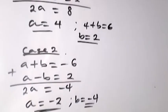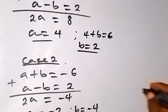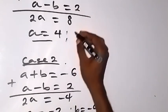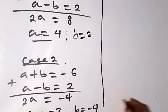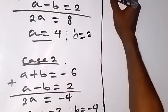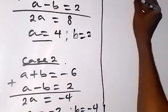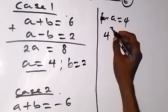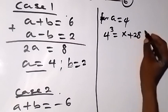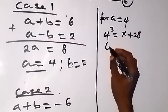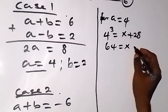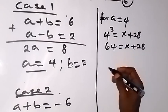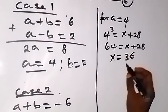For the first value of a, we have a equals 4. So if a is 4, we have a cubed: 4 raised to power 3 equals x plus 28. So 4 raised to power 3 is the same as 64, then 64 equals x plus 28. To get x, take 28 to the other side, and we have 64 minus 28, which gives us 36. Therefore, x equals 36 for this case.